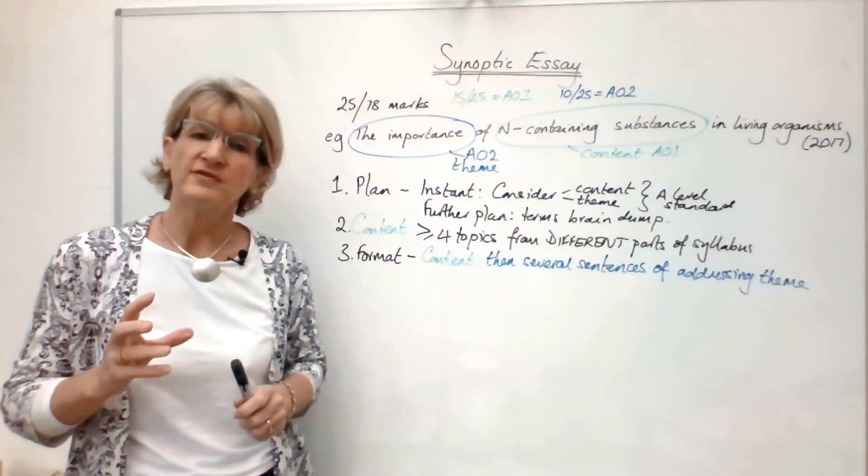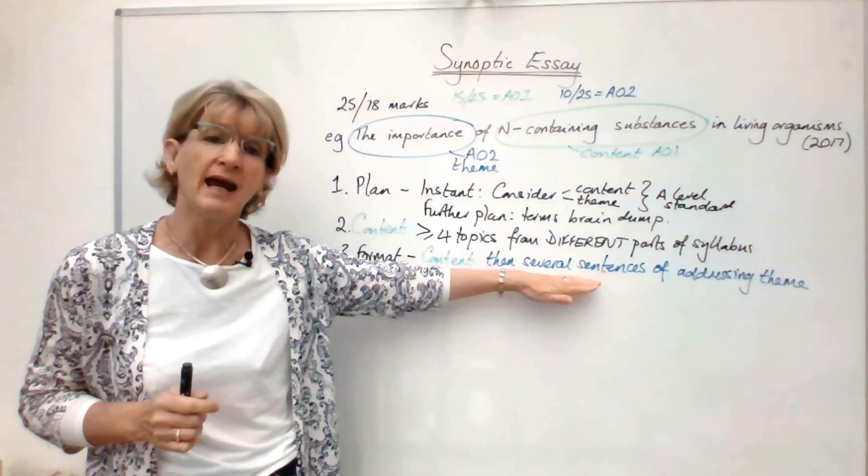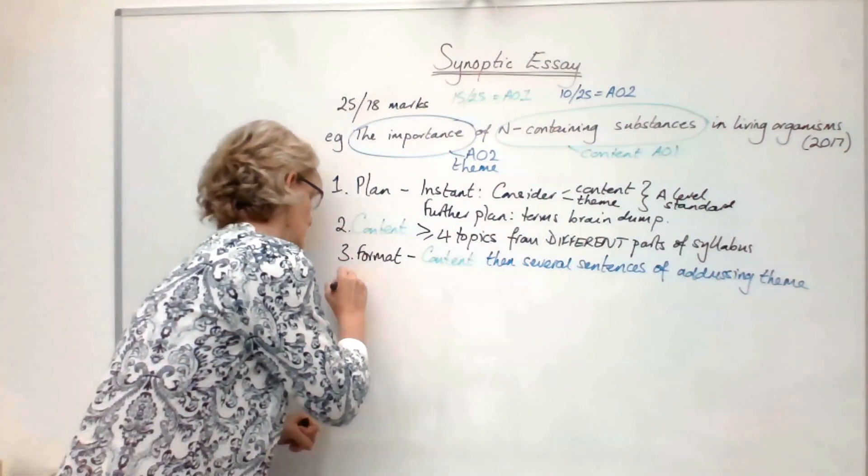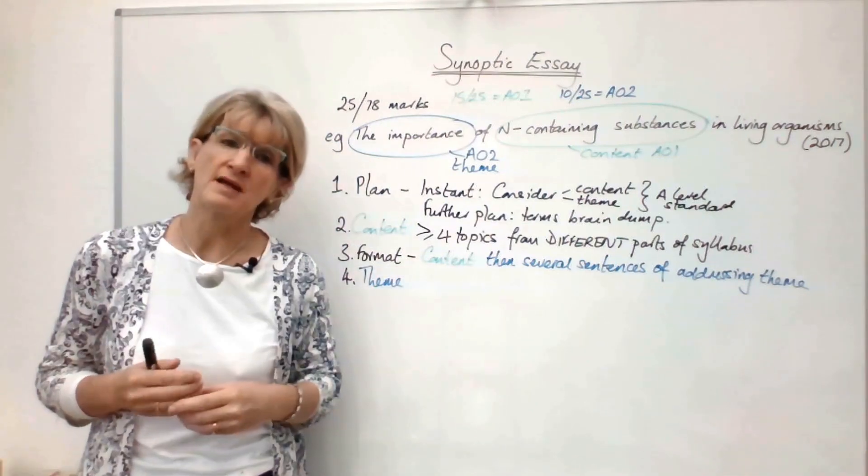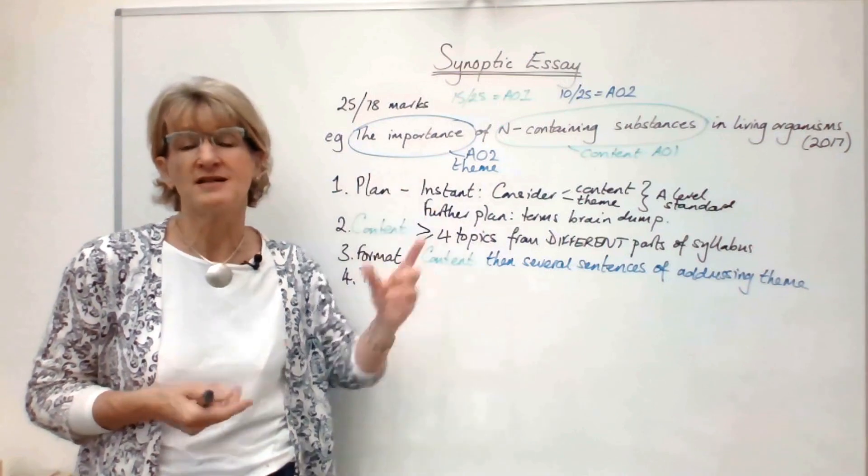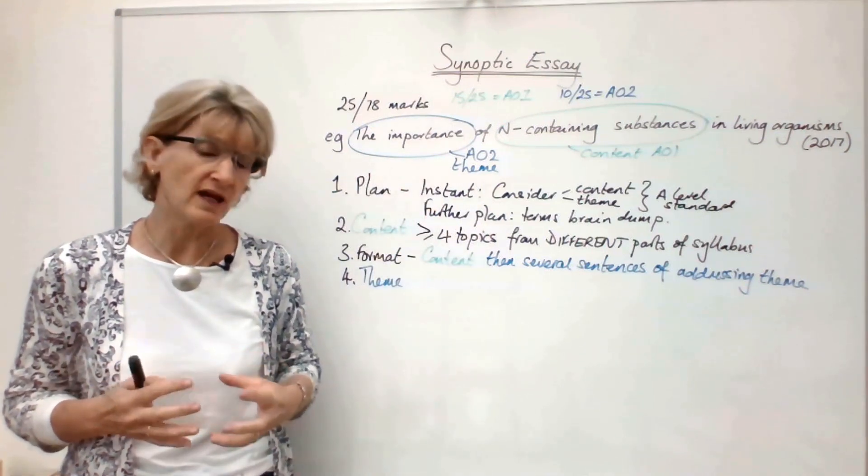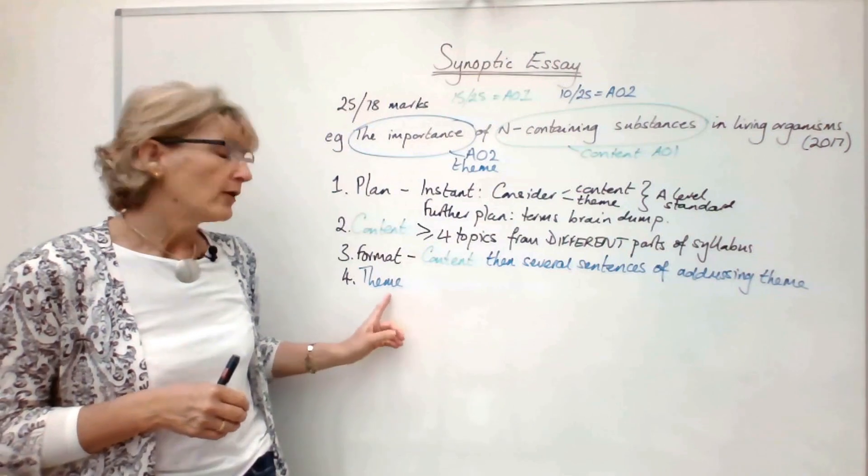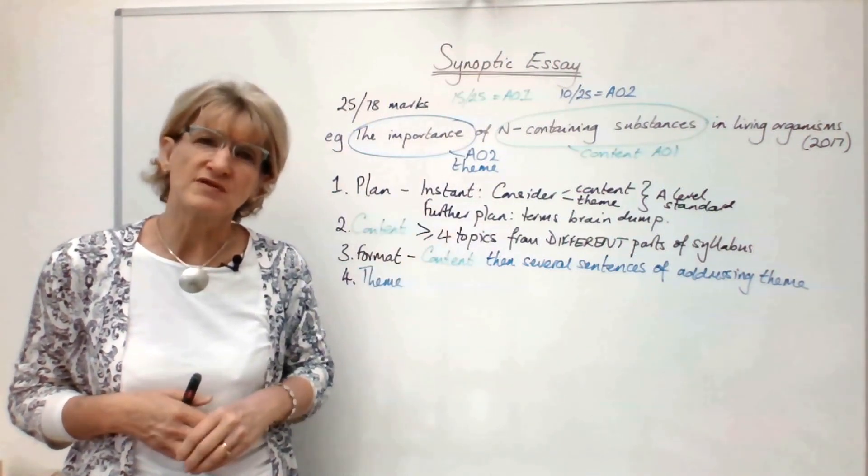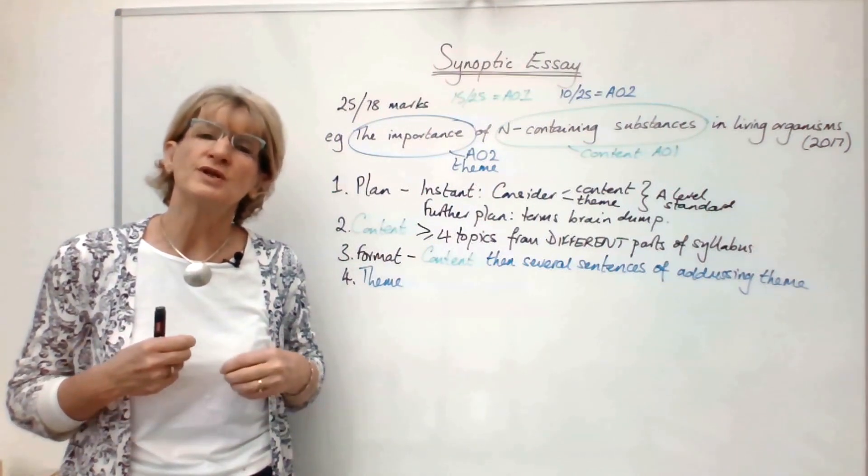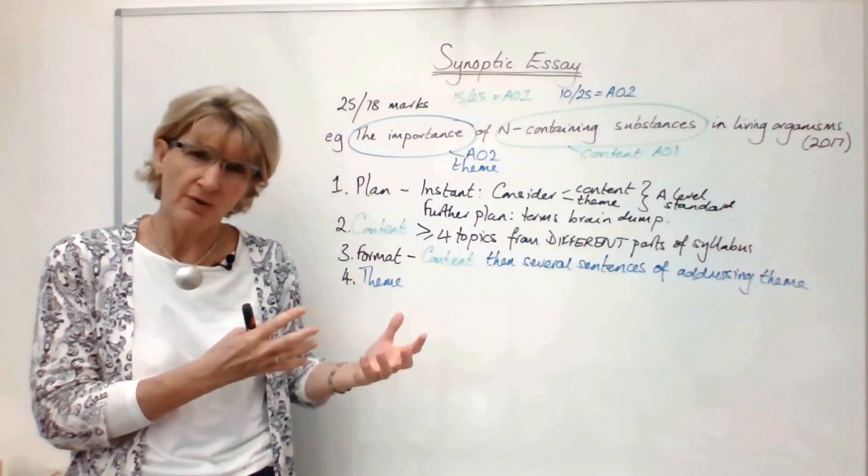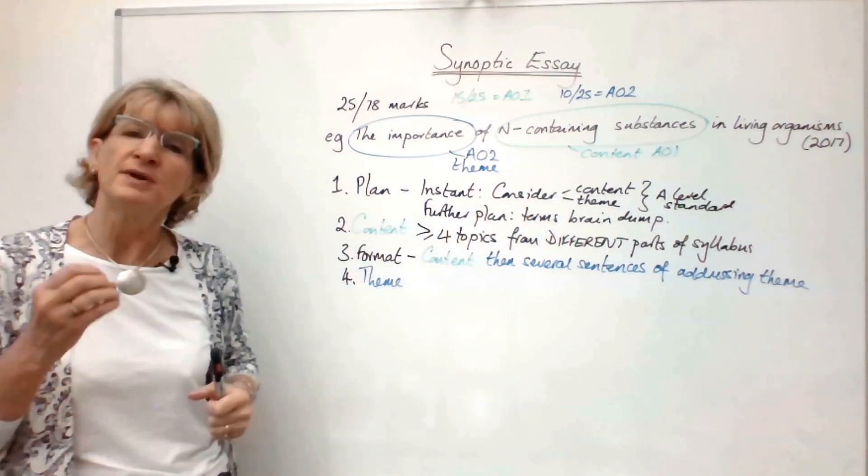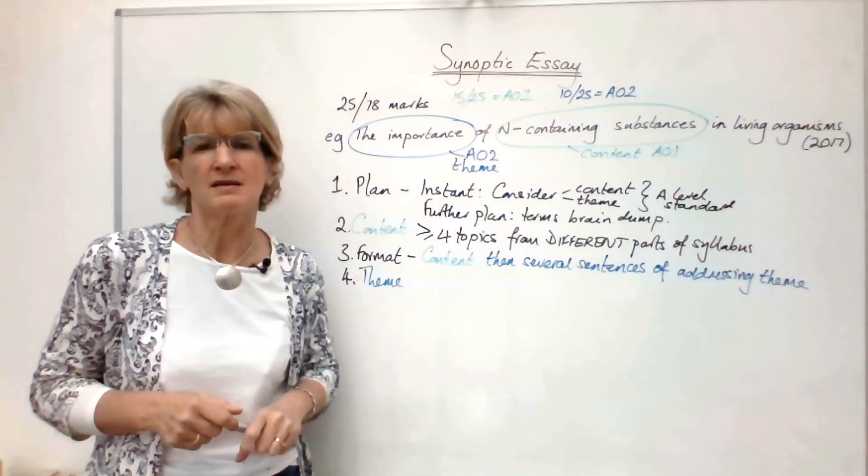Tip number four is about how you get these AO2 marks and how you address the theme of the essay. As a sideline, it's worth you realizing that since the new syllabus came out, all of the essay titles have been about the importance of something. How do you address the theme? If you're talking about the importance of something, think about what would occur or what wouldn't occur to other processes if this example didn't exist.